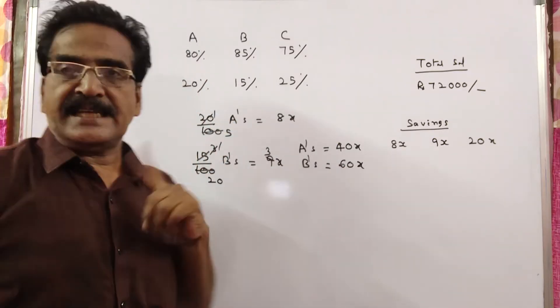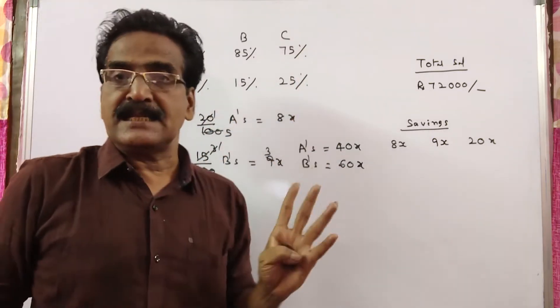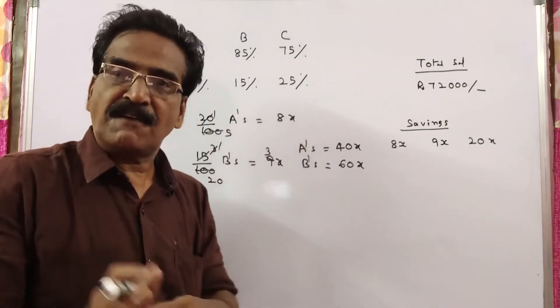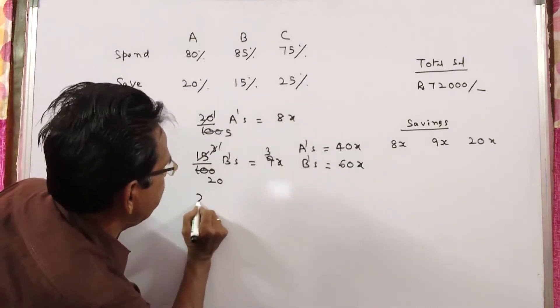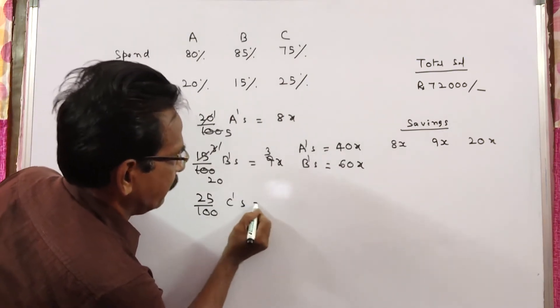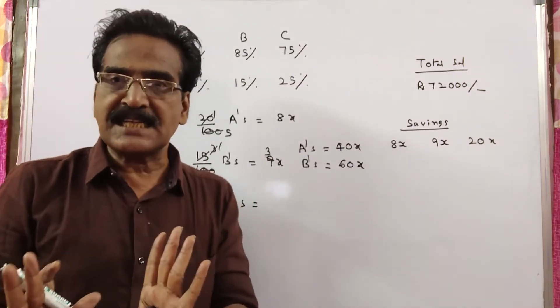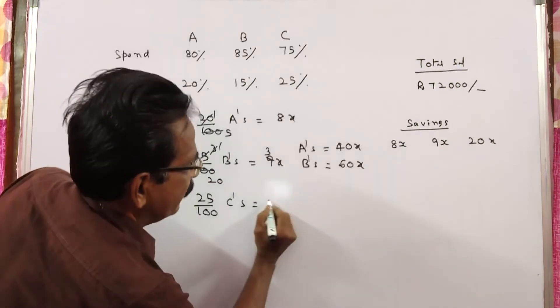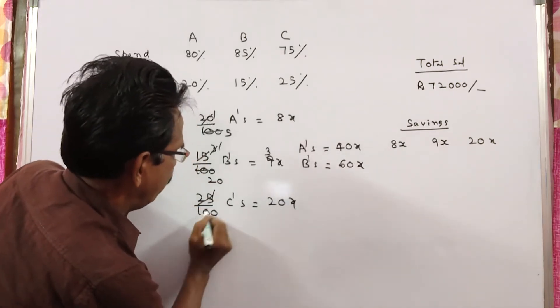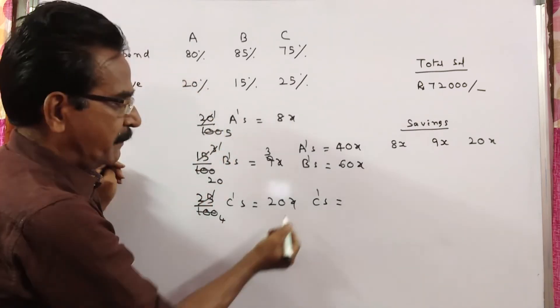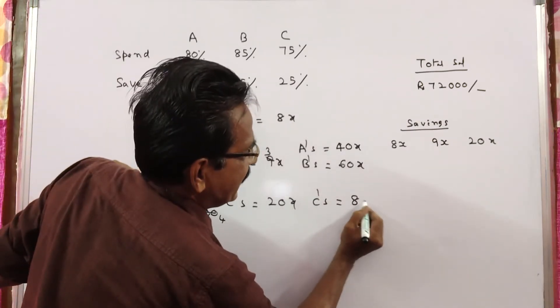In the same way, friends, C spends 75% of his income, that means C saves 25% of his income. So 25% of C's income is his savings. In fact, C saves 20x. So 20x. Therefore, C's income is 80x.